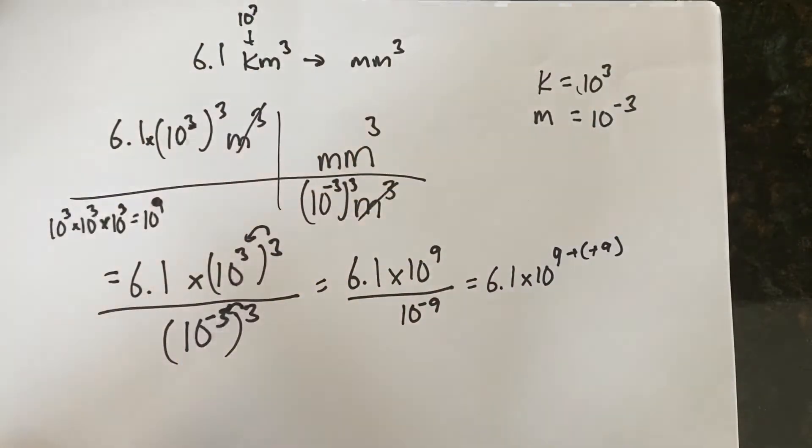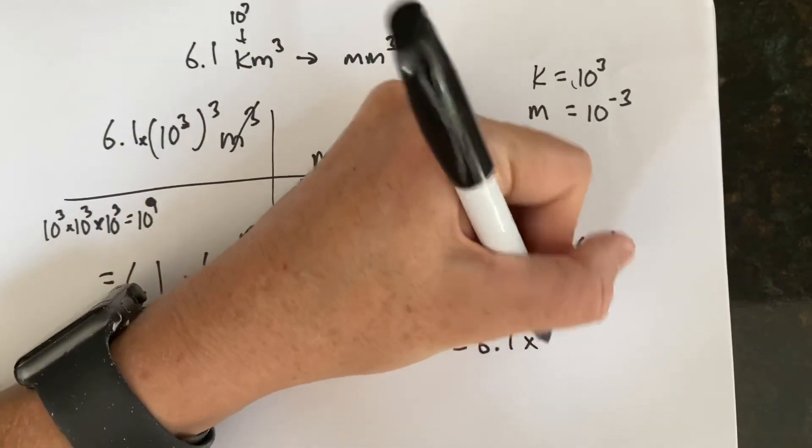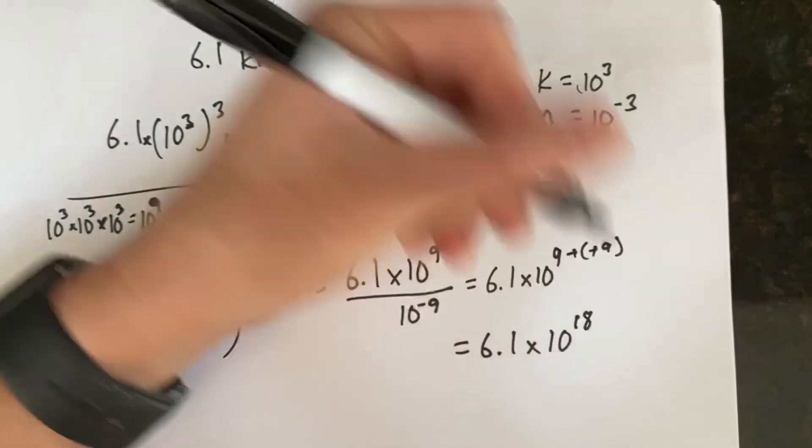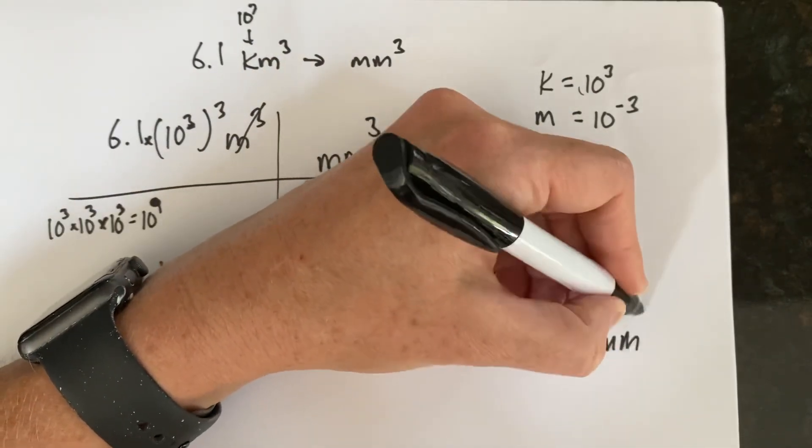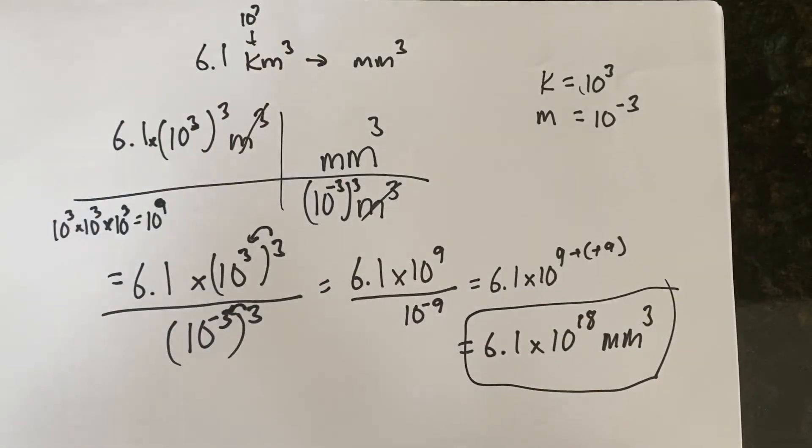Subtracting a negative number is the same thing as adding a positive. So now we've got 6.1 times 10 to the 9 plus 9, or 18. And again, our unit was millimeters cubed. So I hope that helps. Have a good day.